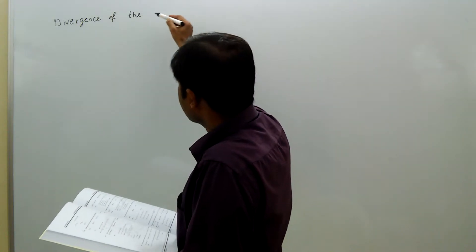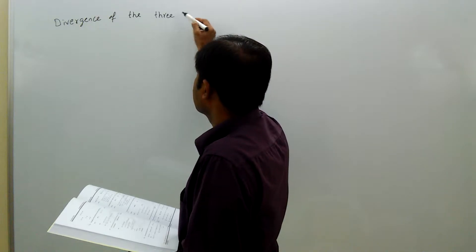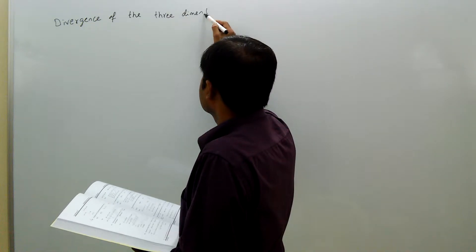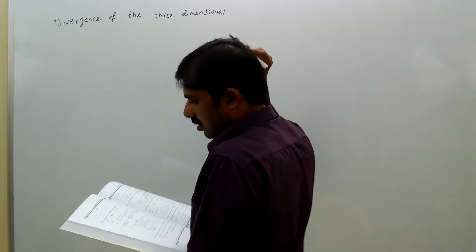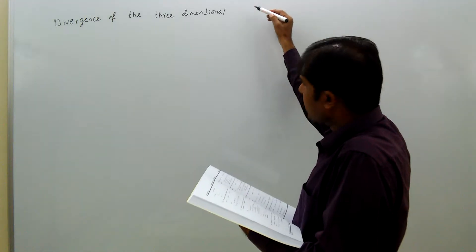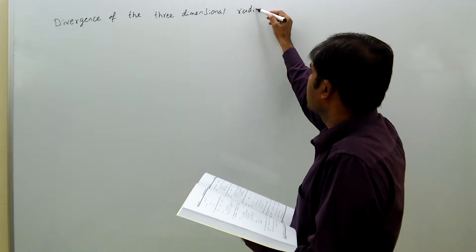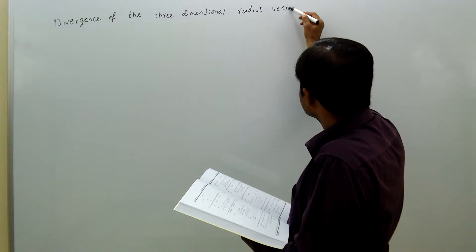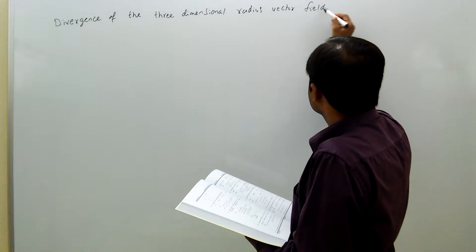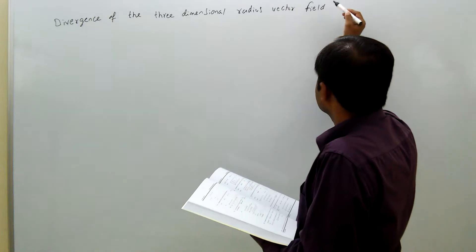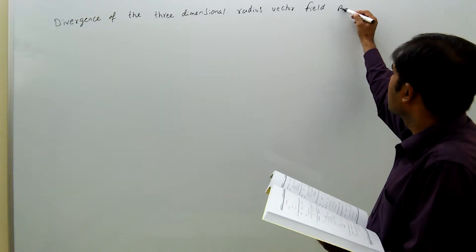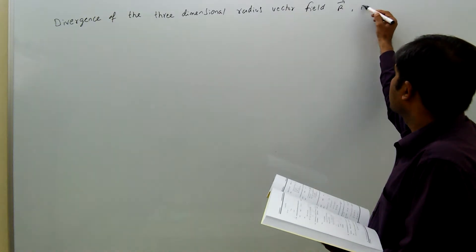The divergence of the three-dimensional radius vector field. And the radius vector field R is: